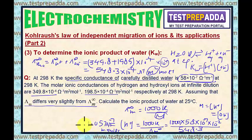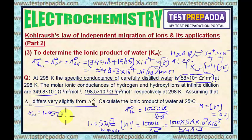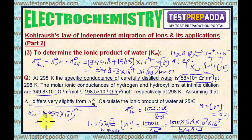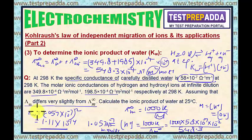This is [H⁺], and the same value applies for [OH⁻]. So Kw = (1.057 × 10⁻⁷)² = 1.11 × 10⁻¹⁴. This is the value of Kw, the ionic product of water.